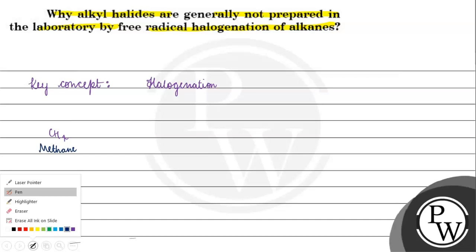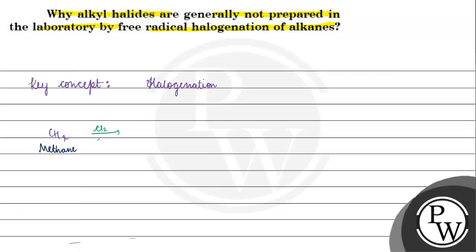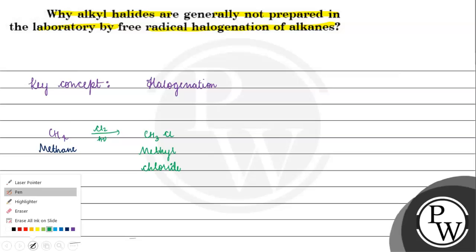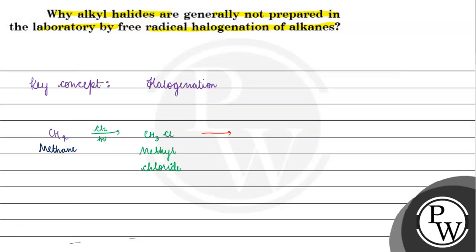For example, when we treat CH4 with Cl2 in the presence of light, we get a combination of multiple chlorinated products. This reaction gives a mixture — chloromethane, dichloromethane, chloroform, and carbon tetrachloride are all formed together.